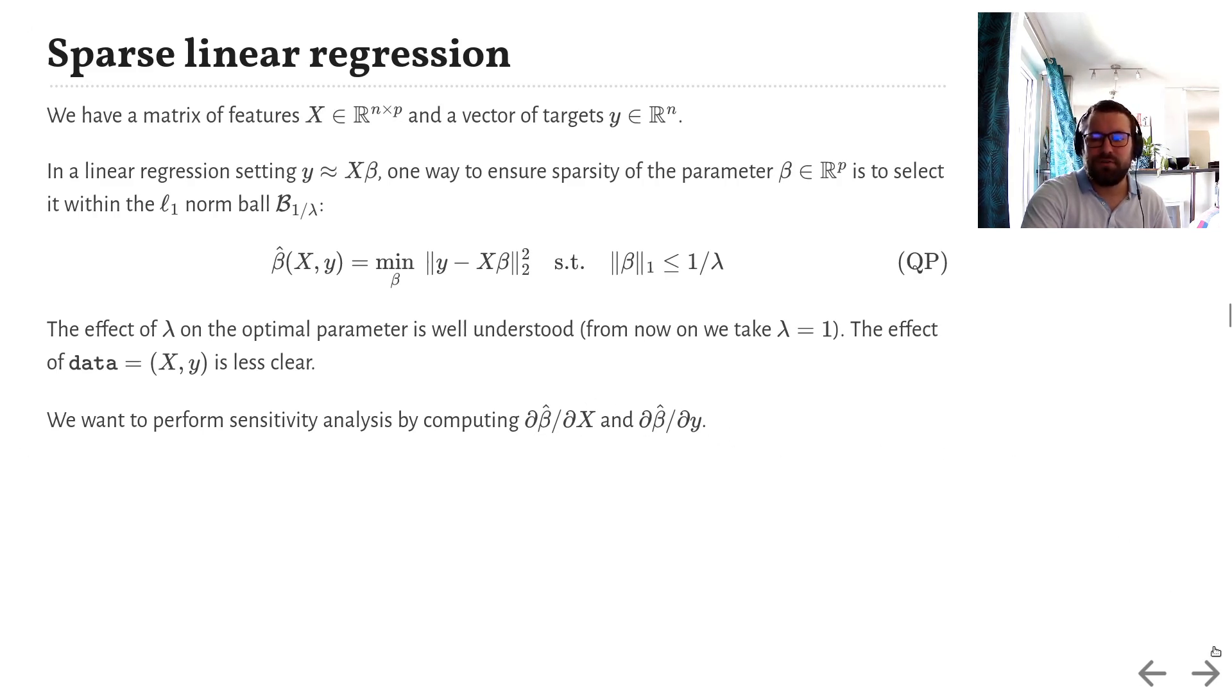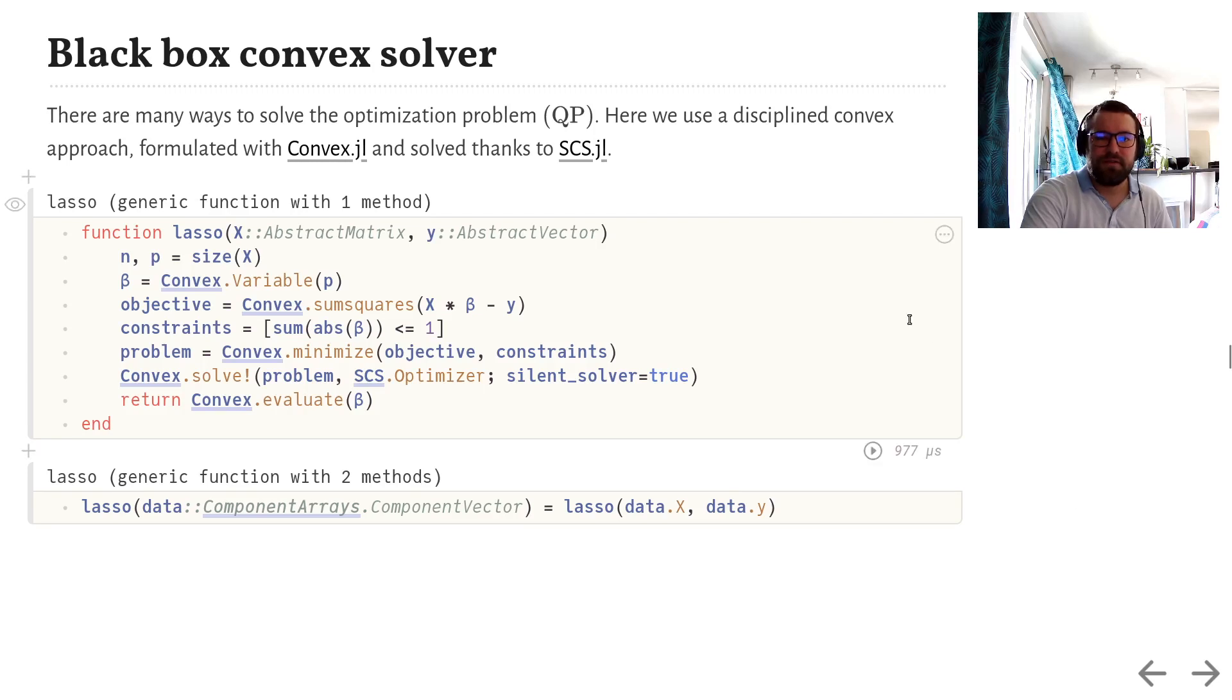First of all, of course, we need to compute beta itself. There are many ways to do it. Here, we chose to use the Convex.jl library and the SCS solver, because the syntax is pretty self-explanatory. We define a decision variable, we specify our squared error objective, our L1 norm constraints, we construct an optimization problem, we solve it, and we return the value of the decision variable. So far, so good.